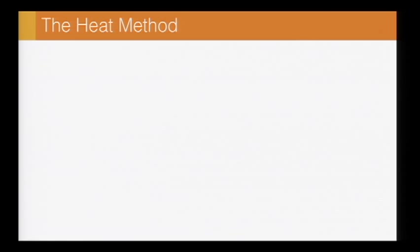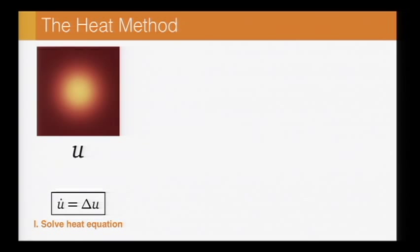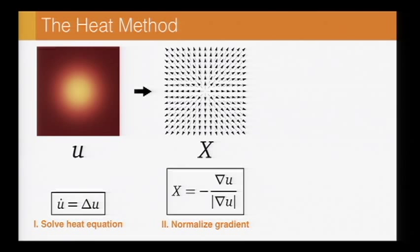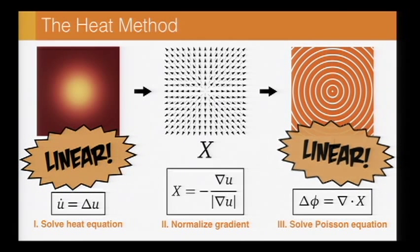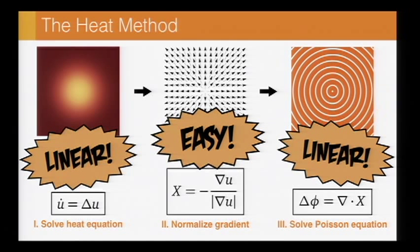Overall, then, the heat method consists of just three simple steps. First, we solve or approximate the heat equation. Second, we normalize the gradient. And third, we recover the distance itself by solving a Poisson equation. And this picture really illustrates the beautiful thing about the heat method, which is that we've taken this nonlinear problem, and we've split it up into two linear pieces by just introducing the right change of variables in between.